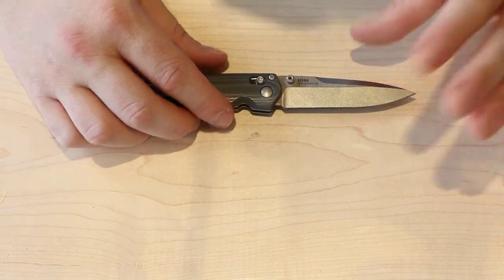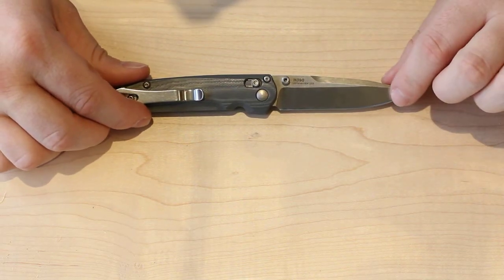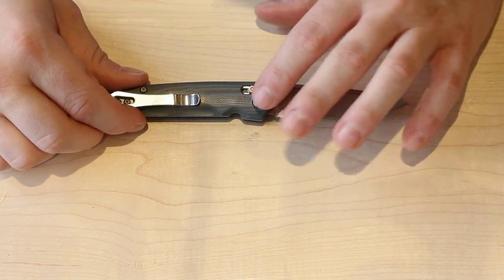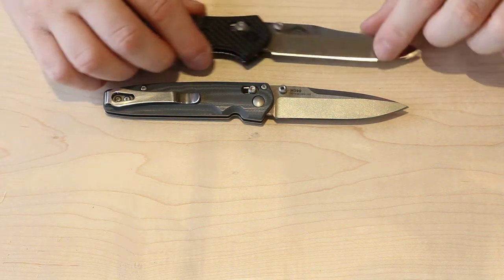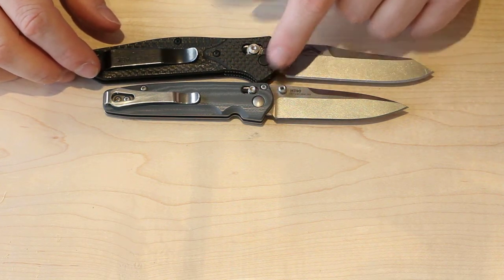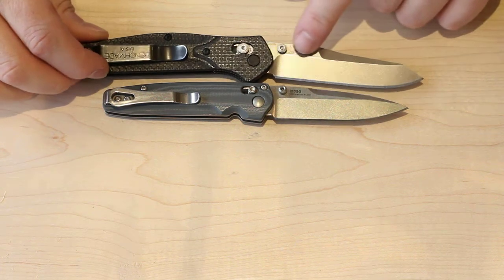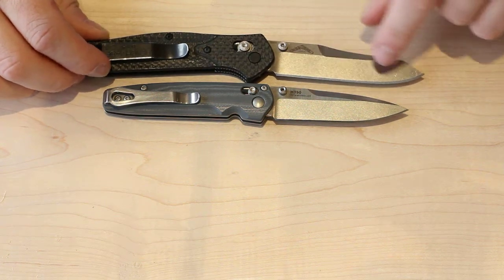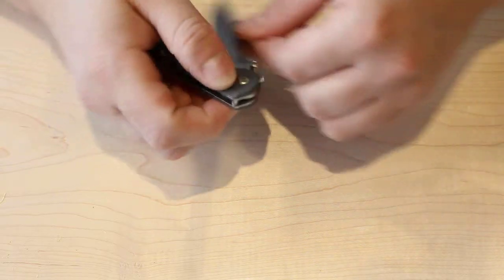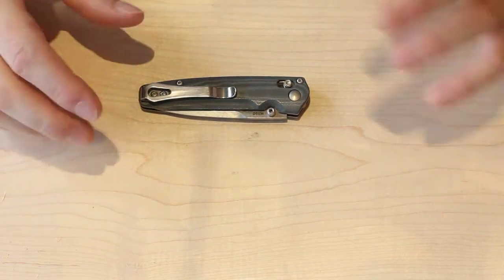Another concern is this has smaller axis lock hardware than the standard Benchmade knife—maybe about two-thirds the normal size of an axis lock. They had to scale it down to make this knife so small. Here it is next to the Benchmade 940, so you can see the difference in the axis locks. Also on the thumb studs, they're a little bit smaller compared to your standard Benchmade thumb stud.